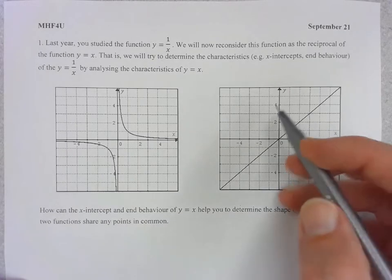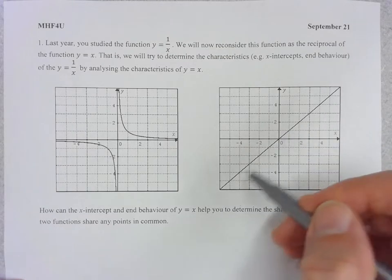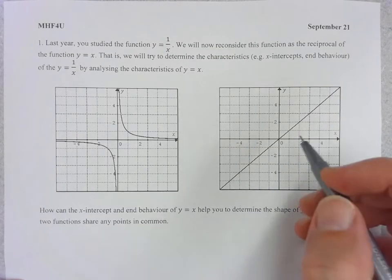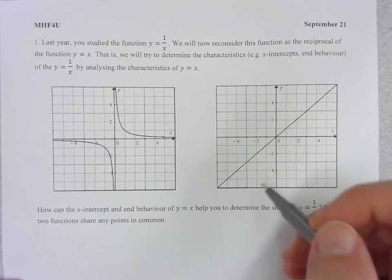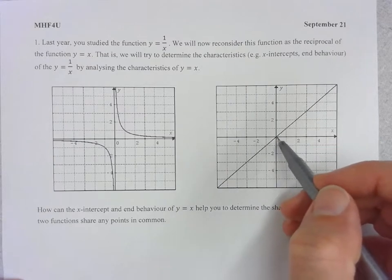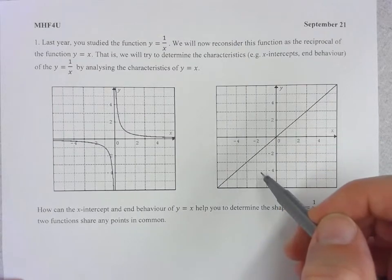So in particular what I want to do is I want to study y equals x and I want to see if those major characteristics of y equals x. So for example, the fact that it has one x-intercept at zero.